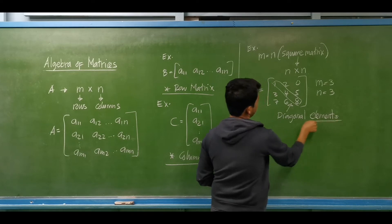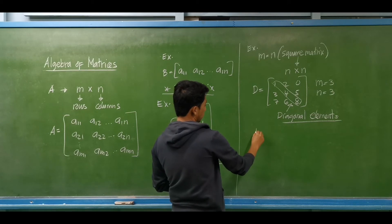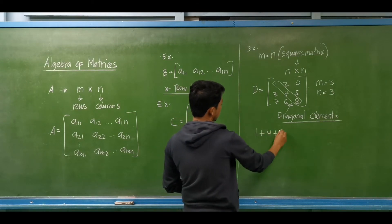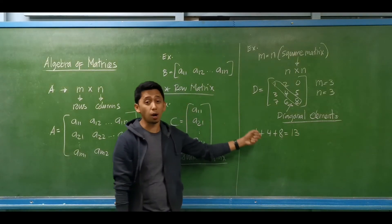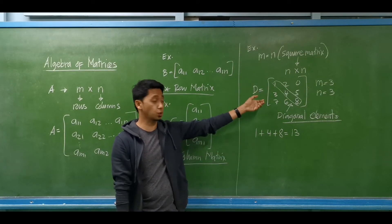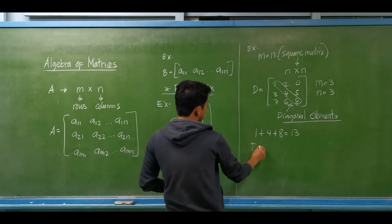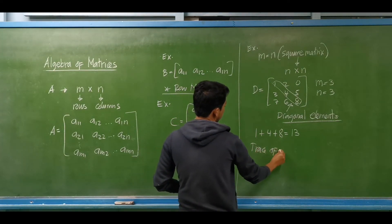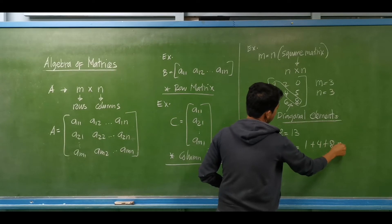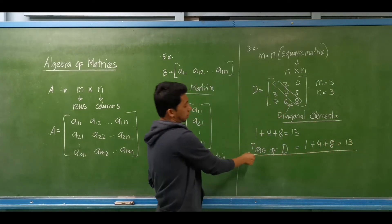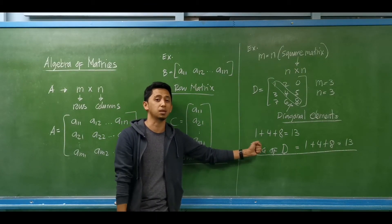The diagonal elements of matrix D are 1, 4, and 8. If we sum the diagonal elements — 1 plus 4 plus 8 — we get 13. We call the sum of the diagonal elements of a given square matrix the trace of a matrix. Therefore, the trace of matrix D is equal to 1 plus 4 plus 8, which equals 13.